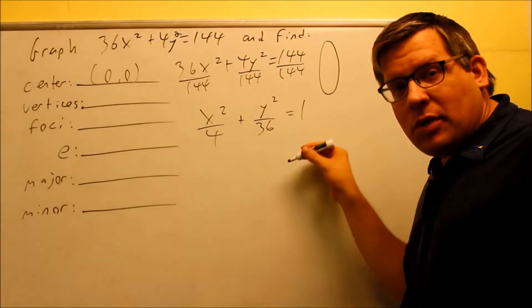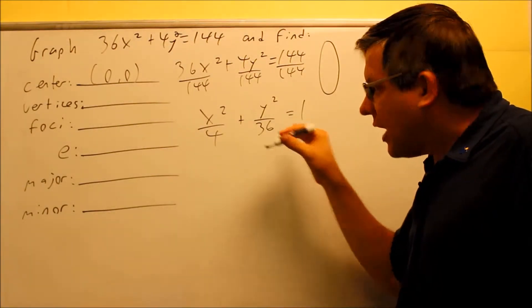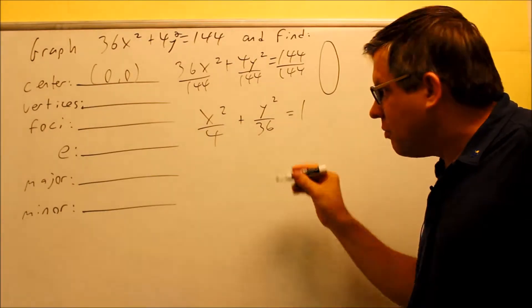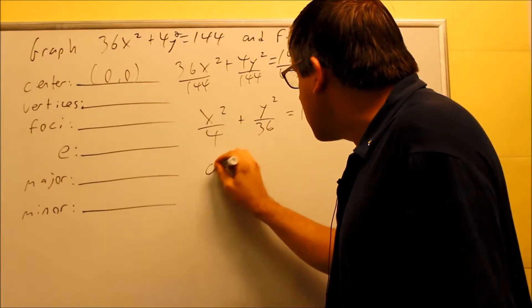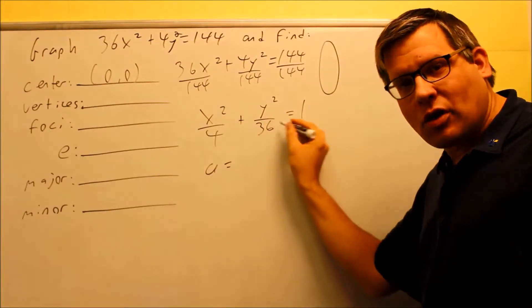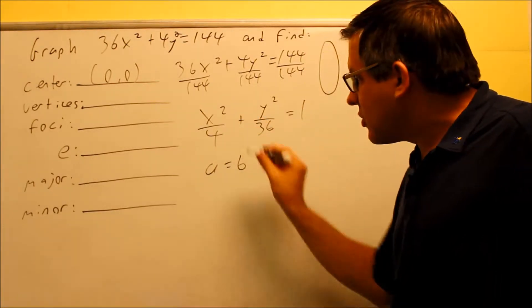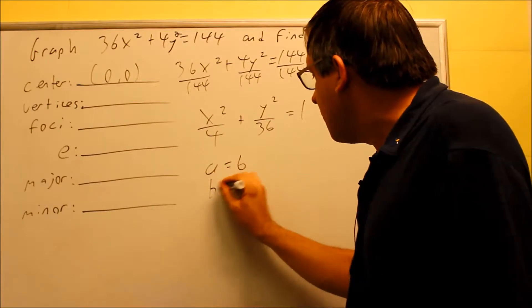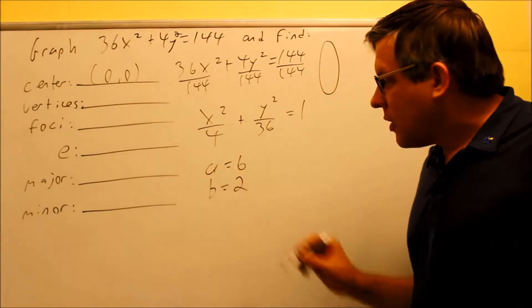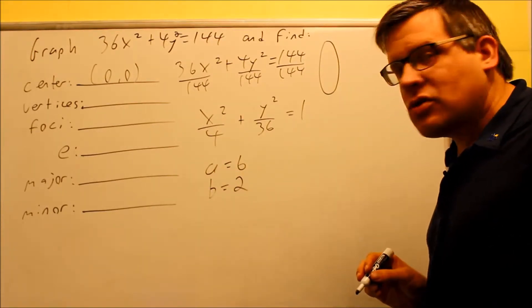We've got to find the a and the b values here. We said always that a is a larger number. So in this case, your a is going to have to be the square root of this larger number, square root of 36 is 6. Square root of 4, that's the smaller number, that's your b. We get 2. So we have a is 6, b is 2.